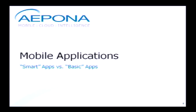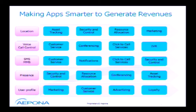Now I'm going to explain how you can attract and keep your subscribers by making your applications smarter — not by forcing your subscribers to use smart devices, but by making your applications smarter. You need to expose location services, voice control, presence, and user profile information to the applications. Smart applications will personalize the look, feel, and content based on user demographics such as gender, age, and the spending patterns of users.